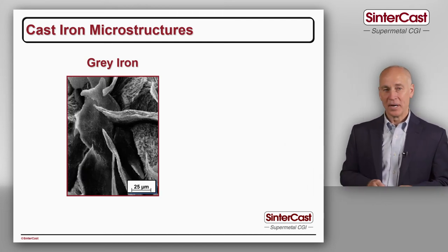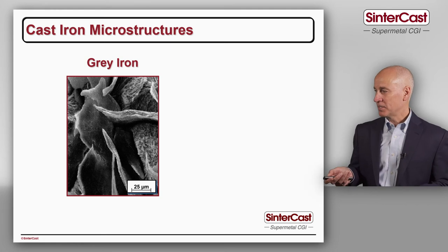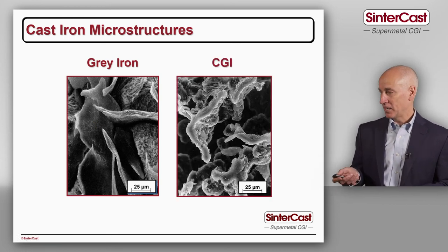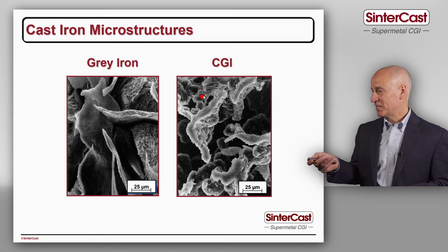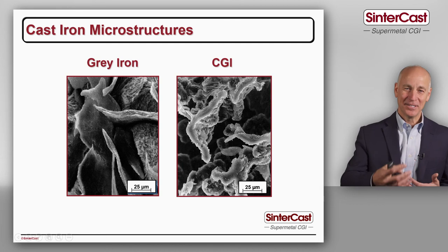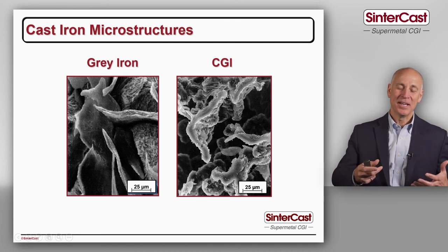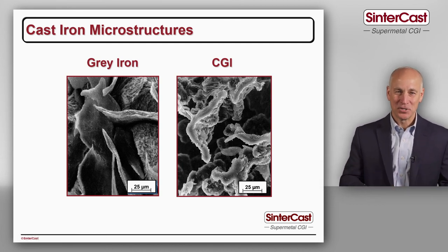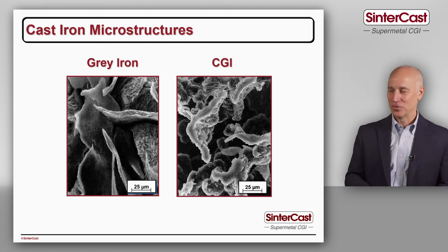At higher magnification we see the very sharp edge and smooth surface of the graphite particle in grey iron. When we look at the same magnification for CGI we see a nice worm shape with a rounded edge, a bumpy surface, and connected to its neighbors. It's that connectedness that gives us the good vibration damping and the good heat transfer.